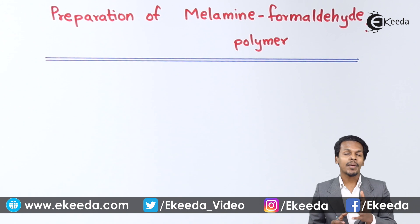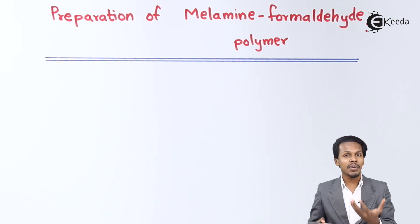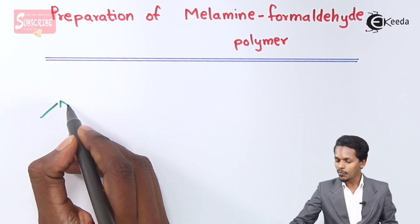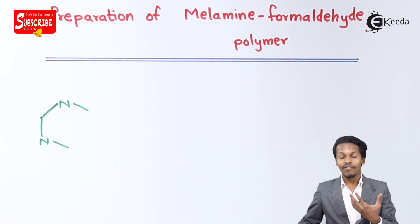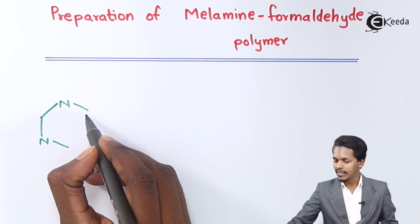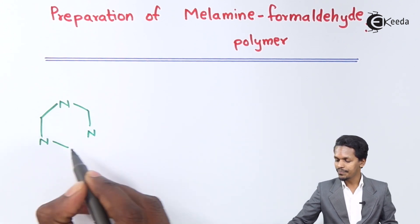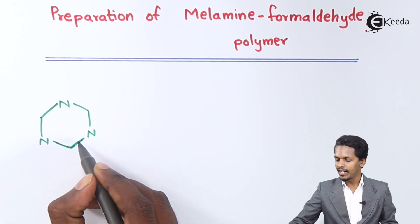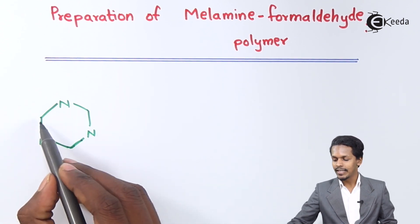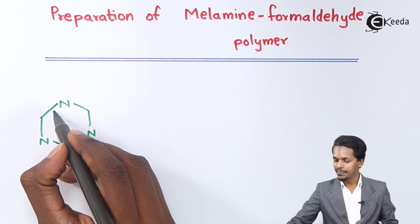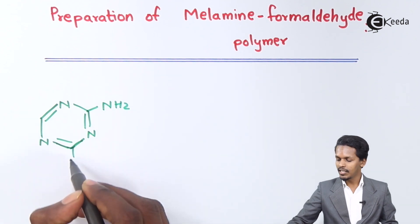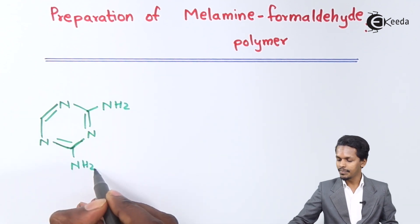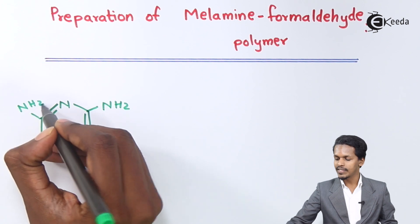As the name suggests, we have to prepare melamine formaldehyde polymer. The reactant species we consider is melamine. Its structure is just like benzene, the only difference being that nitrogen atoms are present. So alternately we have carbon, nitrogen, carbon, nitrogen in the ring, with NH2 groups on the carbon atoms. This structure is known as melamine.